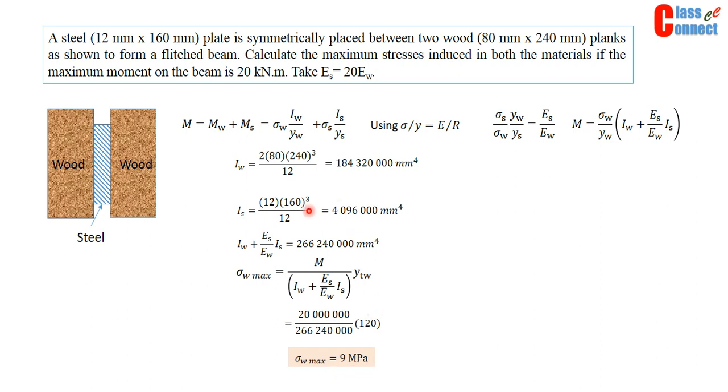Just see the method is similar to what we have used earlier. The only thing we have used modular ratio instead of this, and then we have converted this as equivalent. Now we can substitute the values if we find the value of sigma_S. I have to take sigma_S as common and substitute the values.